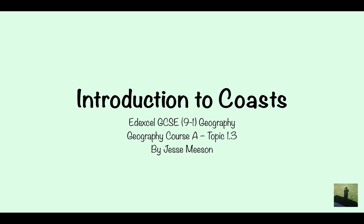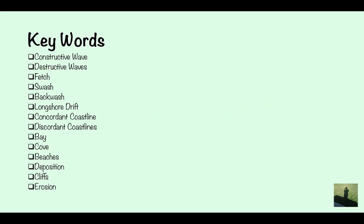Introduction to Coasts, part of the EdExcel GCSE 9-1 geography course. The key words we're going to be looking at here are constructive waves, destructive waves, fetch, swash, backwash, longshore drift, concordant coastline, discordant coastlines, bay, cove, beaches, deposition, cliffs and erosion.